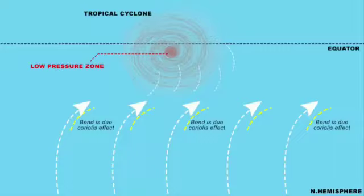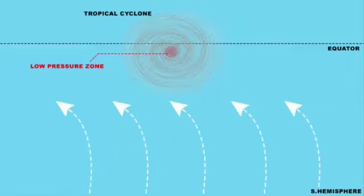In the southern hemisphere, cool air moves towards the left — opposite to what happens in the northern hemisphere. As a result, the spin of the cyclone is in a clockwise direction.